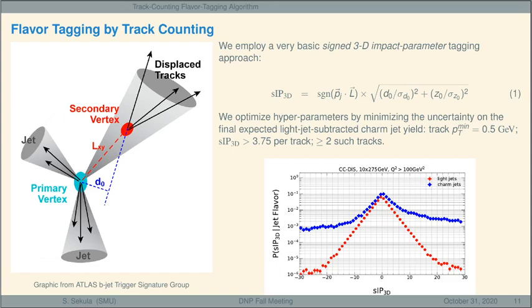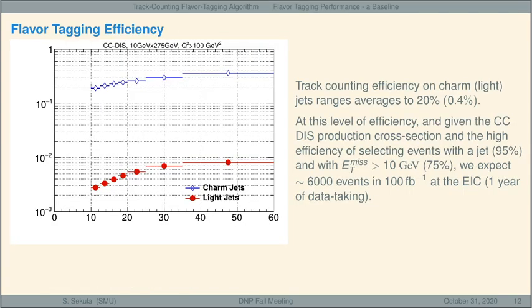And we capture those kinds of jets with those displaced decays by using a very simplistic approach. This is basically looking for displaced tracks from the interaction point and counting them. All right, so we use the signed 3D impact parameter, and we simply count the number of such displaced tracks that we find. We optimize the hyperparameters in this approach by minimizing the uncertainty on the final expected light jet subtracted charm yield in this case. So we're aiming for minimum uncertainty on the charm yield at the end after background subtraction, and you can see here why this is so effective. Charm jets tend to have a very high positive side SIP3D value, whereas light jets, these distributions are relatively symmetric and fall off quickly around zero, okay? So track counting efficiency on charm or light jets ranges from averages of about 20%, okay? That's for the charm jets, and 0.4%, that's for the light jets. So that's the background that we have to subtract, and we've optimized this by then effectively subtracting that background in the analysis. With the kinds of conditions in this analysis, we would expect this to yield about 6,000 fully reconstructed charm jet bearing events, something in that ballpark at the end of 100 inverse femtobarns of data taking about one year.